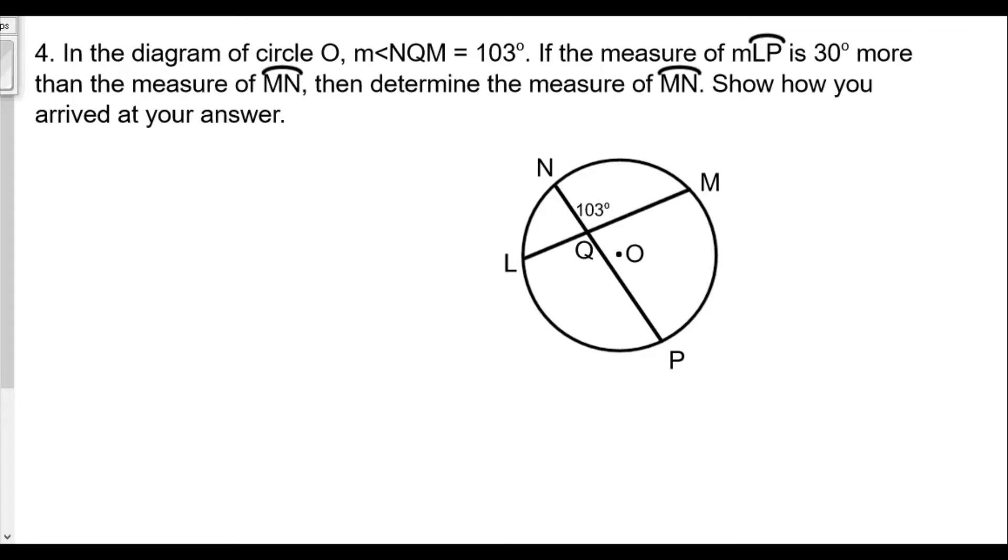We know the angle measure of NQM is 103 degrees, but we're told that the measure of arc LP is 30 more than the measure of arc MN, which means we don't know what arc MN is. Therefore, we'll call that x, and LP in terms of x will be x plus 30.